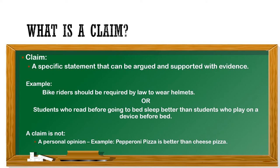We do this all the time and don't even think about it. For example: 'Bike riders should be required by law to wear helmets,' or 'Students who read before going to bed sleep better than students who play on a device before bed.' These are specific statements we can find evidence to support. A claim is not a personal opinion — for example, 'pepperoni pizza is better than cheese pizza.' Personal opinions use words like 'better' or 'best' and are subject to interpretation.